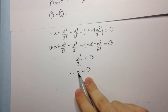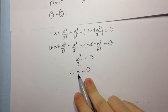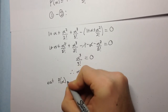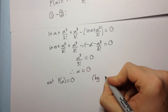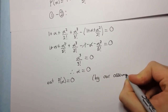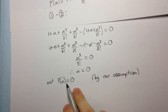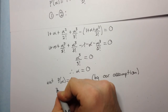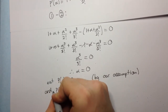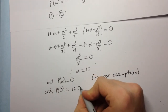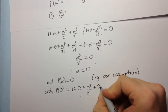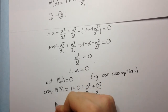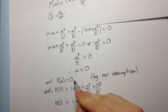So what have we done? We've said that if there's a double root at x equals alpha, the only way there can be a double root is if alpha equals 0. That means p of alpha equals 0. But when we plug 0 into p, p of 0 equals 1 plus 0 plus 0 squared over 2 factorial plus 0 cubed over 3 factorial, which equals 1.